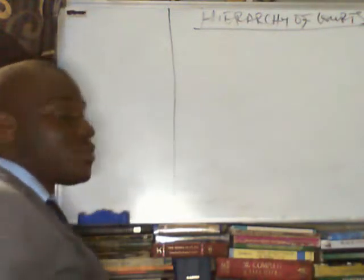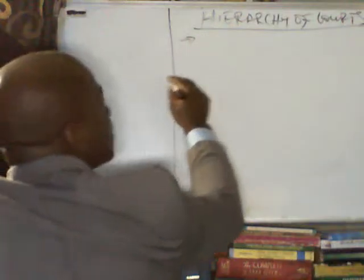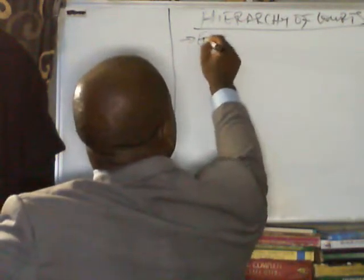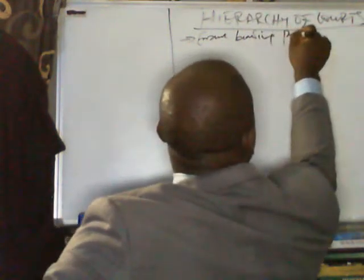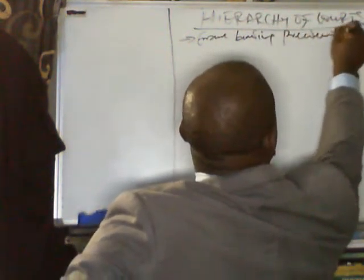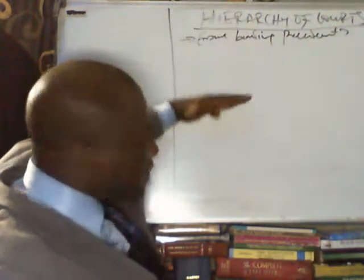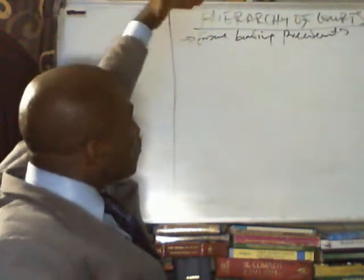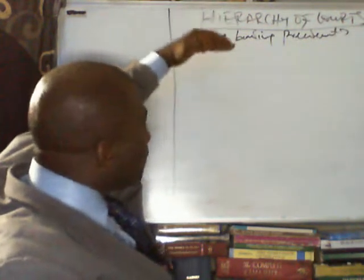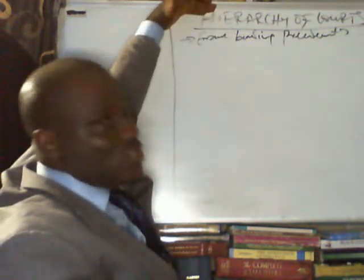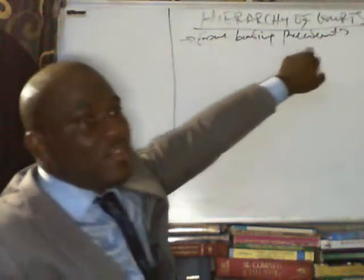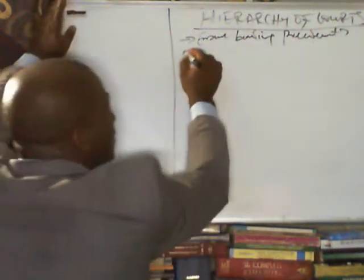If you're looking at the hierarchy of courts, there are other reasons why we need to have a good hierarchy of courts. The first is to ensure the operation of binding precedence. This works in such a way that if there is a hierarchy of courts, with courts in descending or ascending order, then all the courts at the top are able to influence the courts beneath, and all the courts beneath are bound by decisions of the courts above.